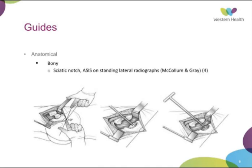Some of the guides you can use rely on the patient's own anatomy — bony, soft tissue, or combined. The McCollum and Gray technique utilizes palpation of the sciatic notch and the anterior superior iliac spine intraoperatively. You can also get an idea on a standing lateral radiograph preoperatively with the X-ray tube centered on the greater trochanter, which typically gives 20 degrees of anteversion. In their experience they modified the target to plus 10 degrees, aiming for an overall anteversion of 30 degrees.